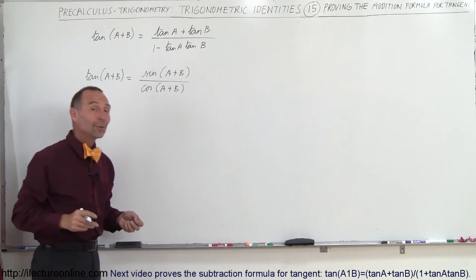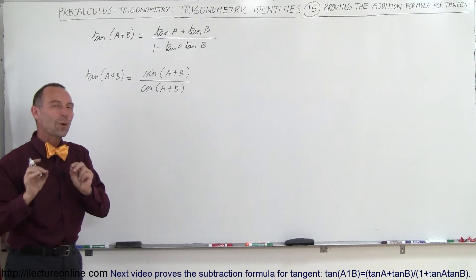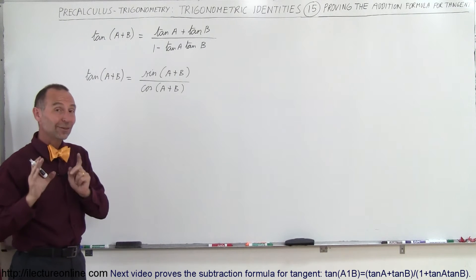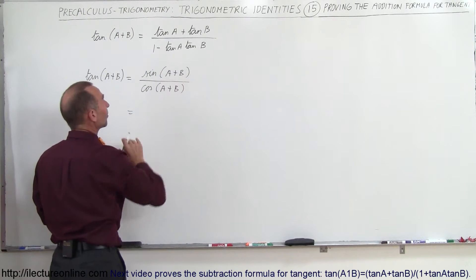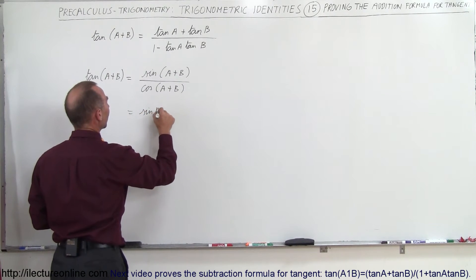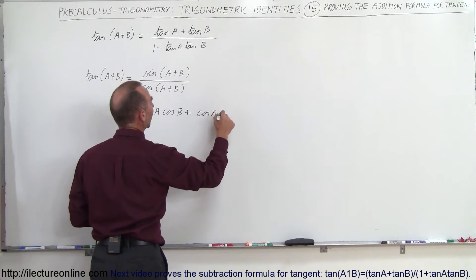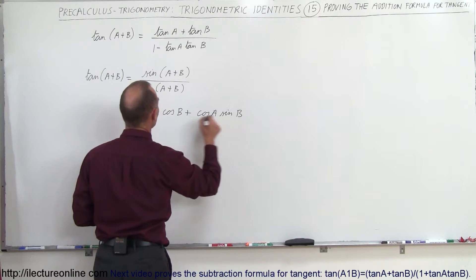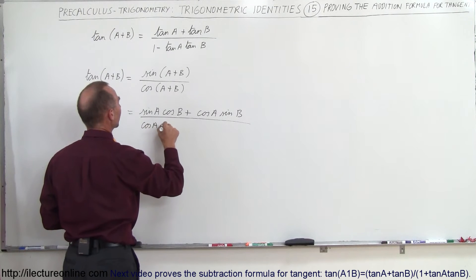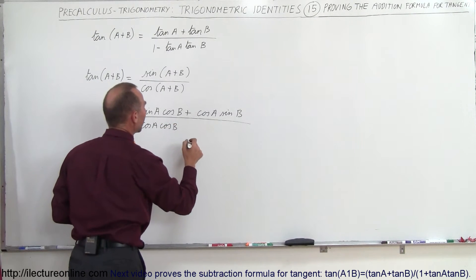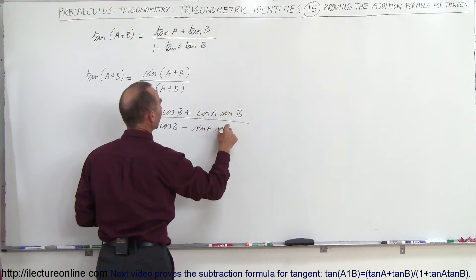Now, we're going to expand those out and everything should simplify — well, not quite that simple, but you're thinking in the right direction. So the sine of A plus B gives us the sine of A times the cosine of B plus the cosine of A times the sine of B, divided by the cosine of A plus B, which becomes the cosine of A times the cosine of B minus the sine of A times the sine of B.